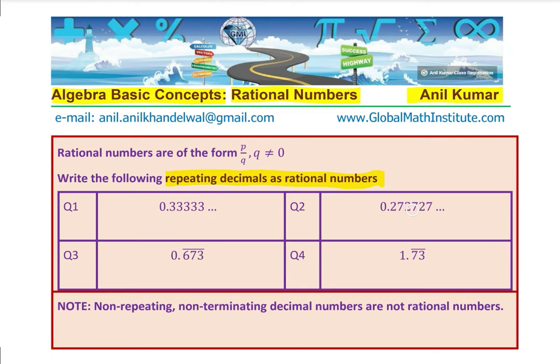0.272727 repeating, which can also be written with a bar on the top. This bar signifies that 673 repeats, so this number is 0.673673673 after decimal. Similarly, question 4: 1.7373 repeating is 1.737373 and so on. I would like you to pause the video, answer this question, and figure out a strategy to do this in less than a minute.